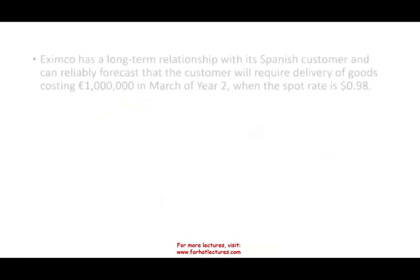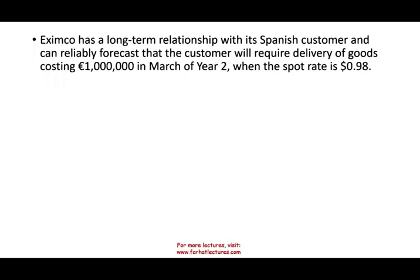The best way to illustrate this is to work an example. We're going to go back to AXIMCO. AXIMCO has a long-term relationship with a Spanish customer — notice it's long-term, so they know what they're doing on a repeated basis and can reliably forecast. They didn't make a firm commitment, they didn't buy or sell anything. They know they are going to have to deliver goods costing 1 million euros on March 2nd of year two.